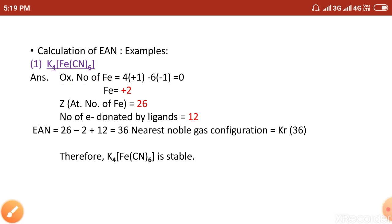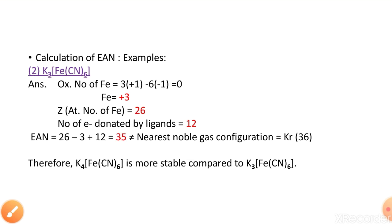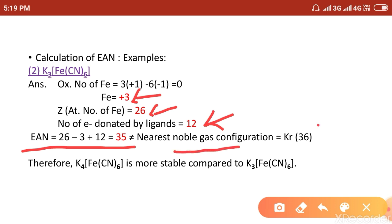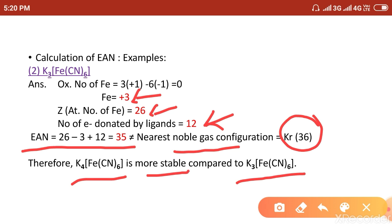Comparing with K₃[Fe(CN)₆], the only change is the oxidation state of Fe, which is now +3. Atomic number of Fe is 26, electrons donated by CN⁻ (6 ligands) = 12. So EAN = 26 − 3 + 12 = 35, which is not equal to 36 (krypton). Therefore K₃[Fe(CN)₆] is less stable than K₄[Fe(CN)₆].